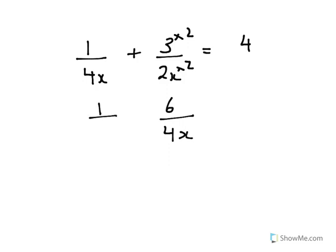I now have 4x in the bottom terms of both of my fractions, so now I can add them. I'm adding in 4x's, and 1 plus 6 is 7. So 7 over 4x equals 4.